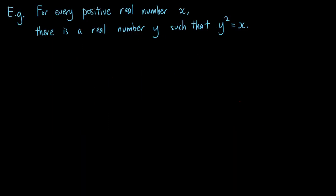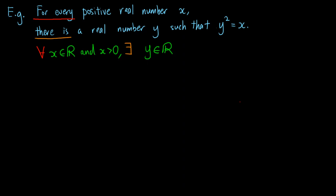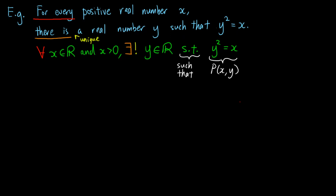Let's try to rewrite predicates using these quantifiers. We have seen this predicate before: for every positive real number x, there is a real number y such that y squared equals x. We see 'for every,' so we first write down an upside-down A. We also have 'there is,' so we put down a backwards E. Instead of writing 'positive real numbers x,' we use set theory notation and write x in the real numbers and x greater than 0. For the remaining part, we write s.t. to represent 'such that.' If the sentence had the extra word 'unique,' then we would add an exclamation mark after the backwards E.